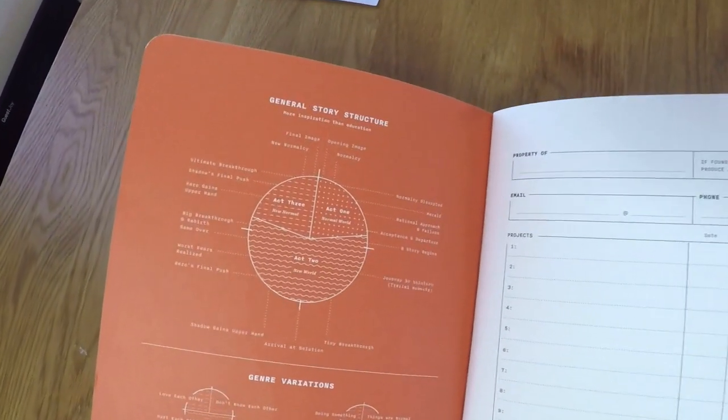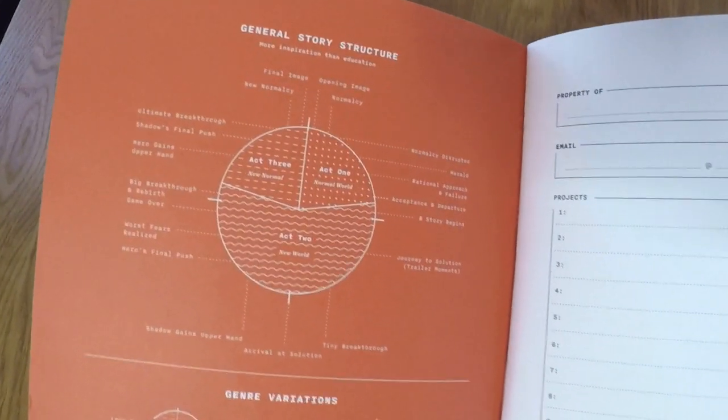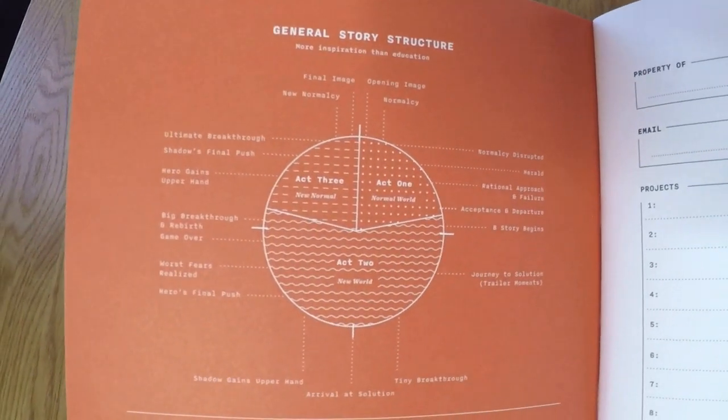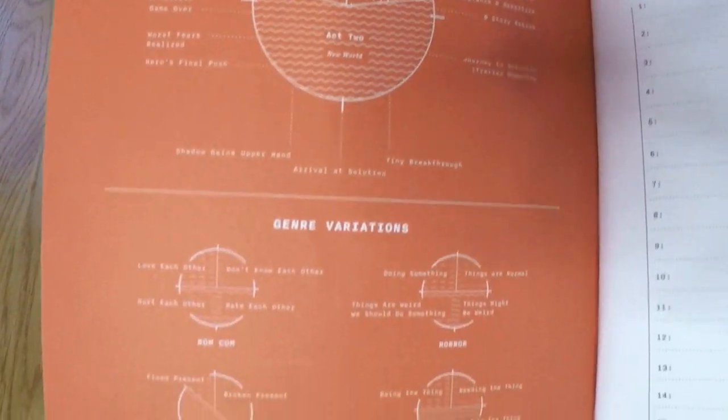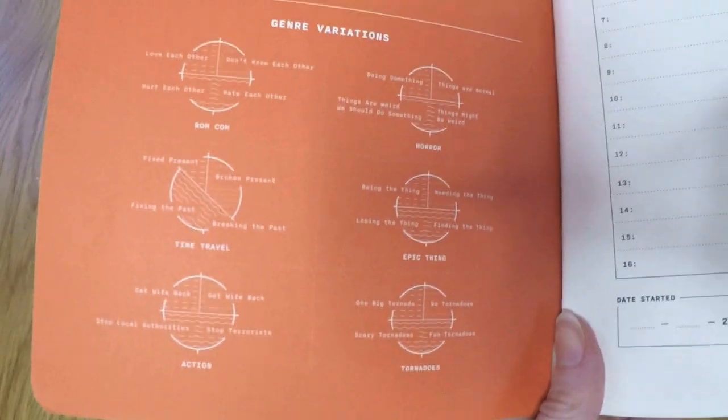These key events are very similar to Save the Cat if you've done that in the past. They include your opening image, normalcy, normalcy being disrupted, a herald or messenger, rational approach to the challenge and failure, acceptance of the call to adventure and departure, and so on through to the end of the story.